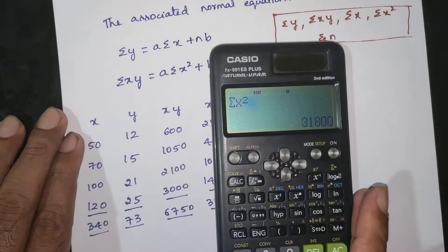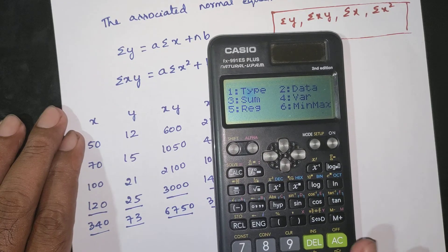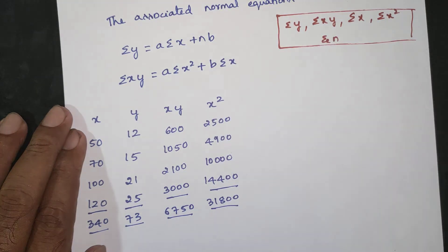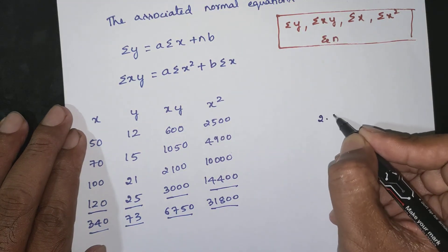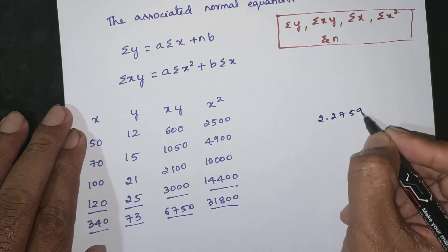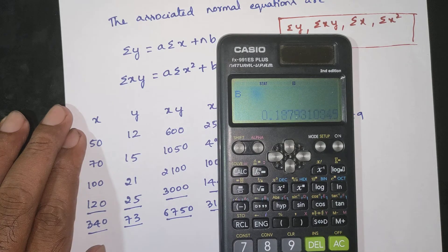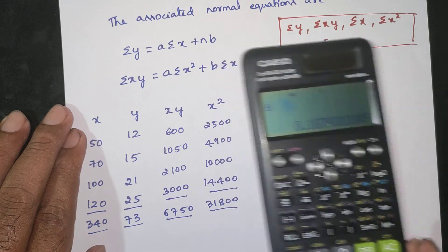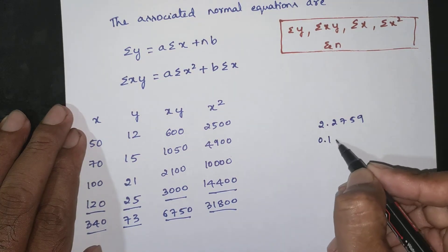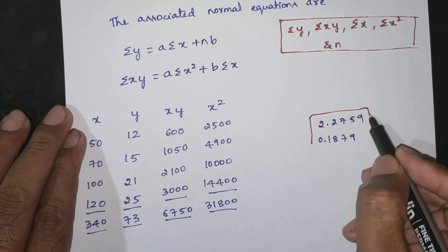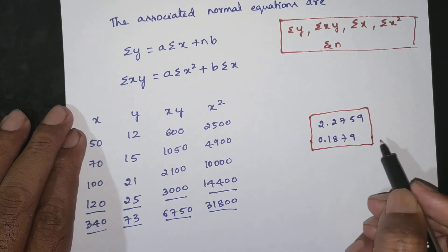Using SHIFT 1, regression function: summation of x squared = 31,800 confirmed. A is equal to 0.1879.